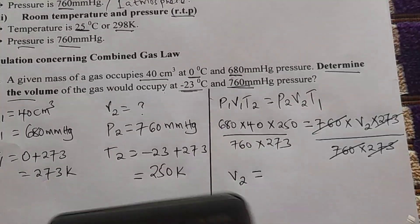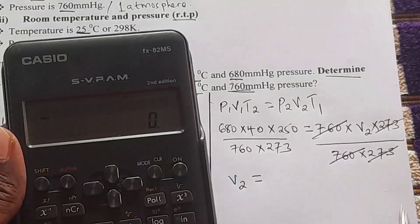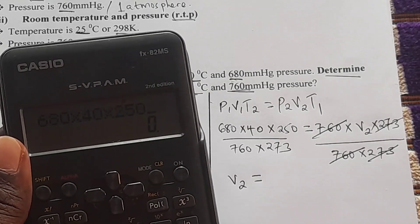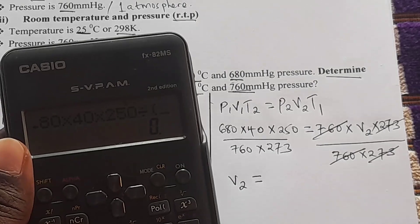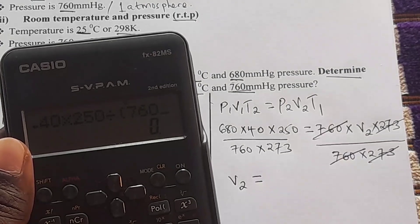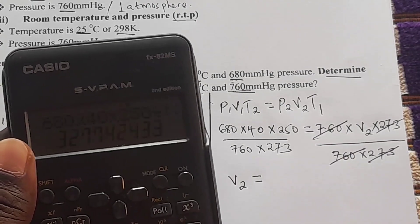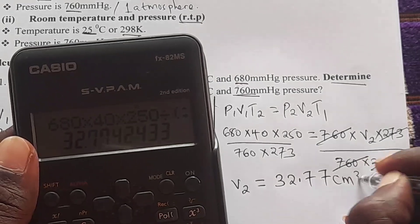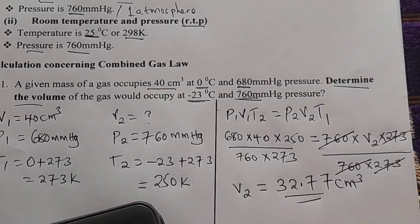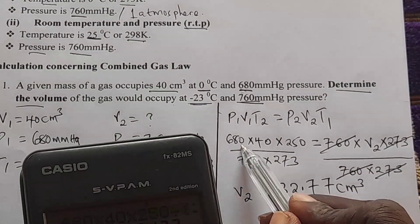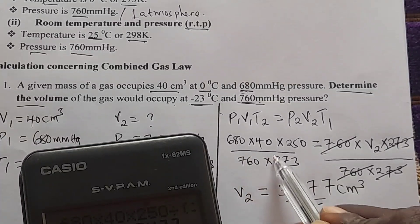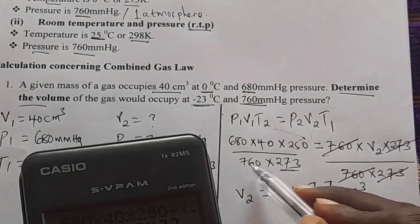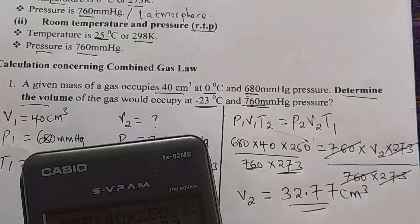When putting these values in the calculator, you can do it two ways. First get the upper value: 680 × 40 × 250, then divide. Or when you divide, put the denominator in brackets: divided by (760 × 273). This gives the answer as 32.77 cm³. Be careful — if you just multiply 760 × 273 without brackets you will get a wrong answer, because you need two separate divisions.